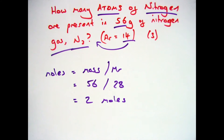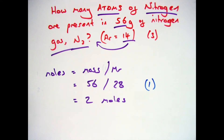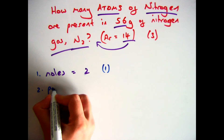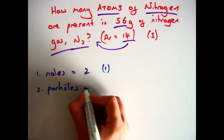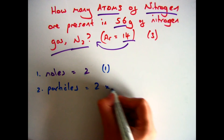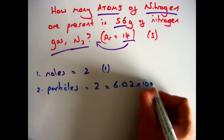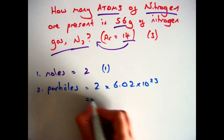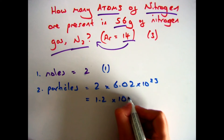That gives your first mark out of 3. The second mark: you've got your moles, now work out your particles. That's 2 times Avogadro's constant — 2 times 6.02 × 10²³ — which gives me 1.2 × 10²⁴.